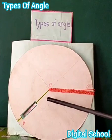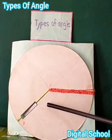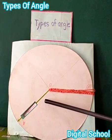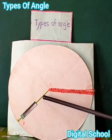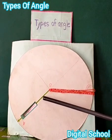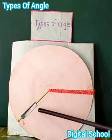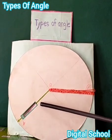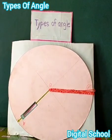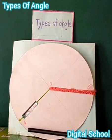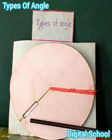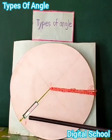Assalamu alaikum, I am Humira. Today we will learn about types of angle. Dear friends, look at the board. This is a reflex angle. In the figure, ABC is a reflex angle. Thank you.